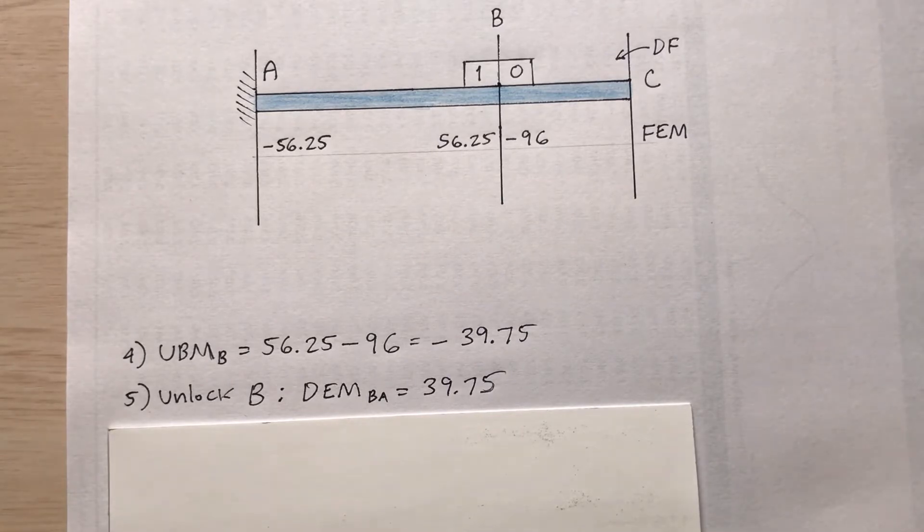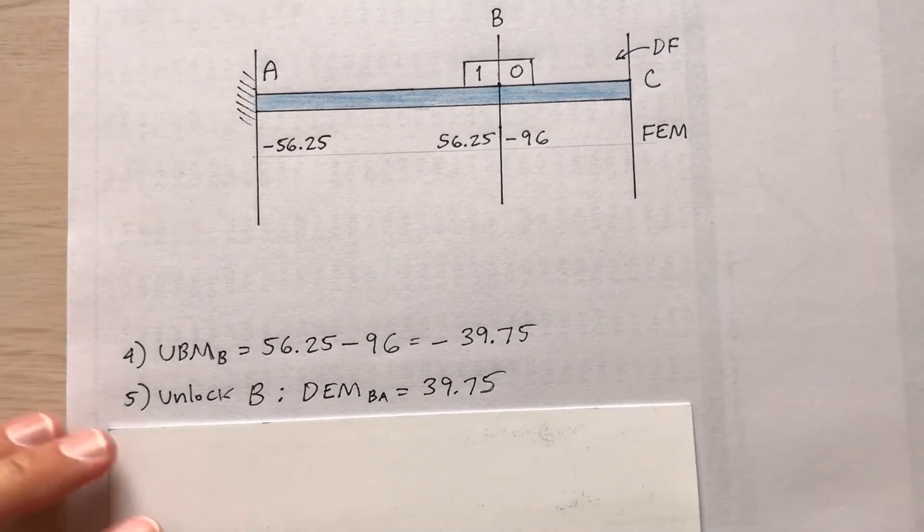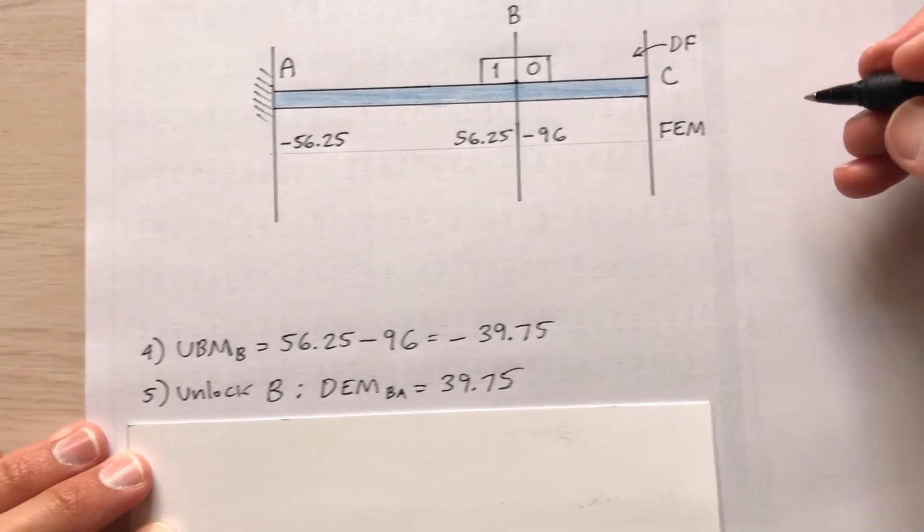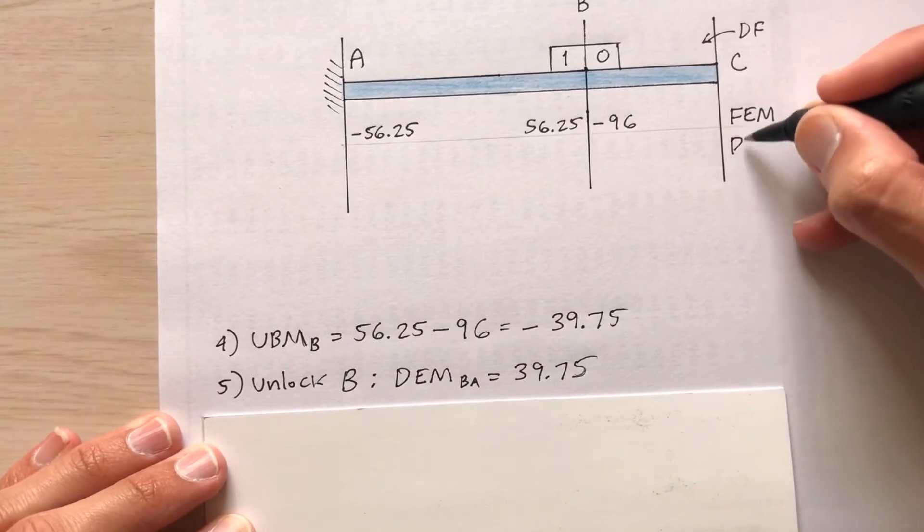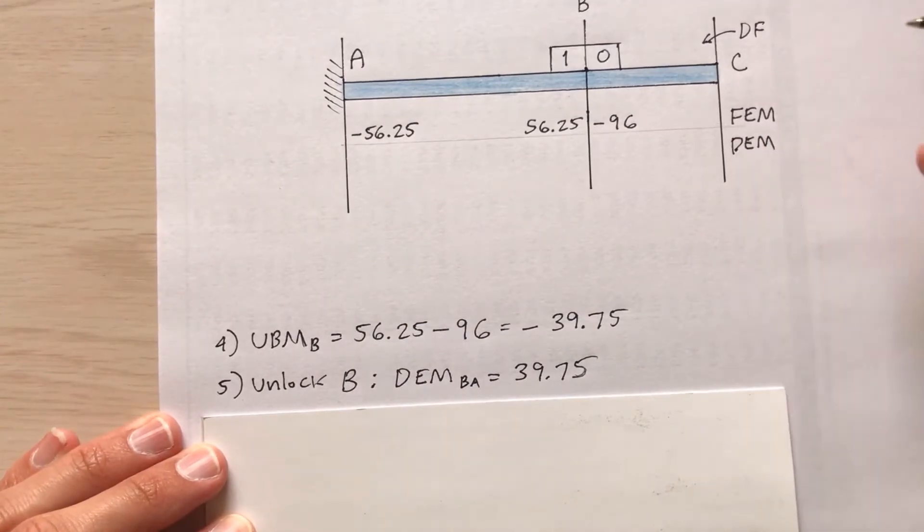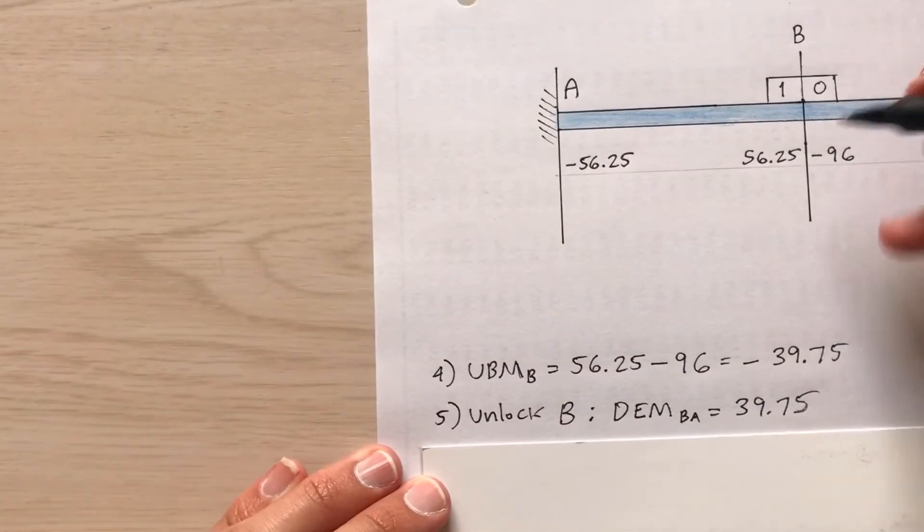That 39.75, I'm going to put that under here. This is the distributed end moment, DEM 39.75.